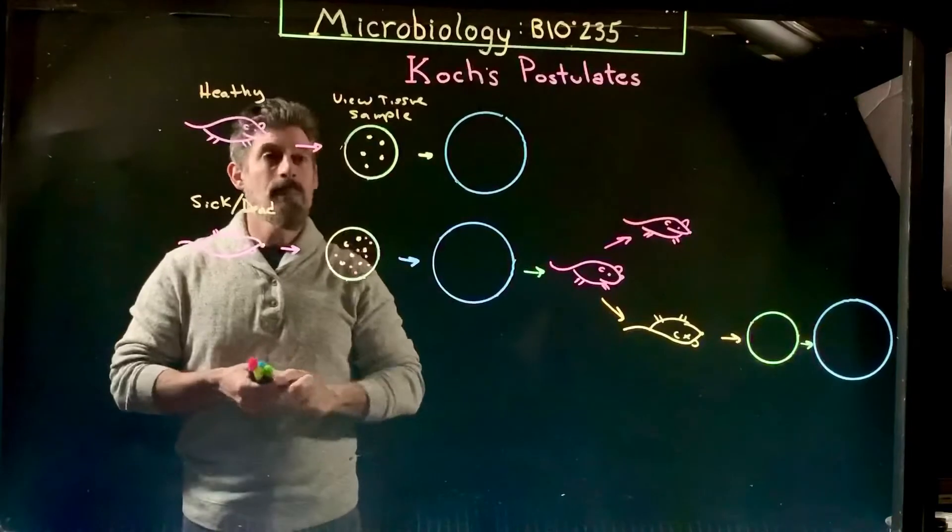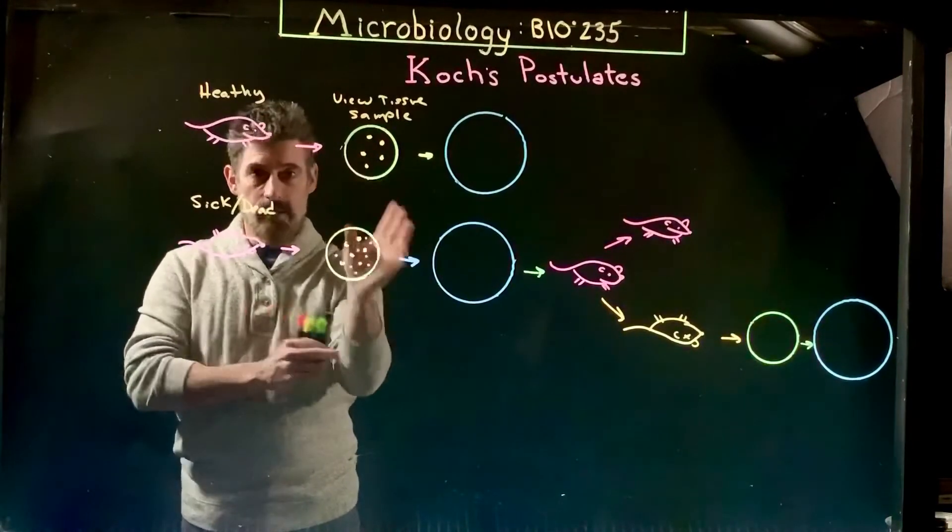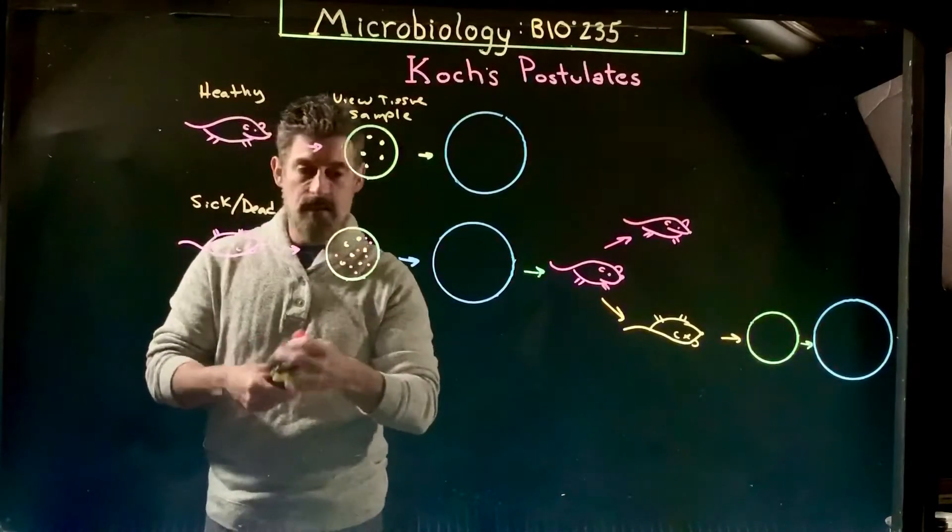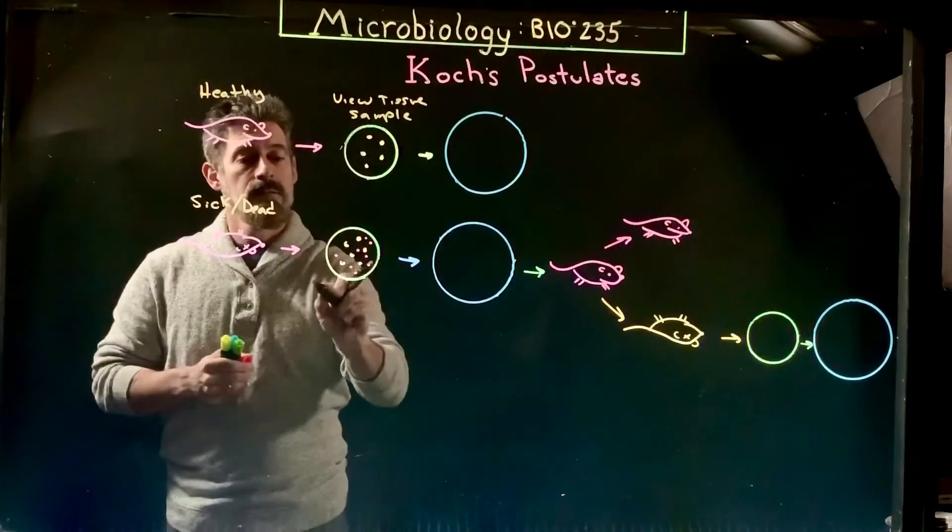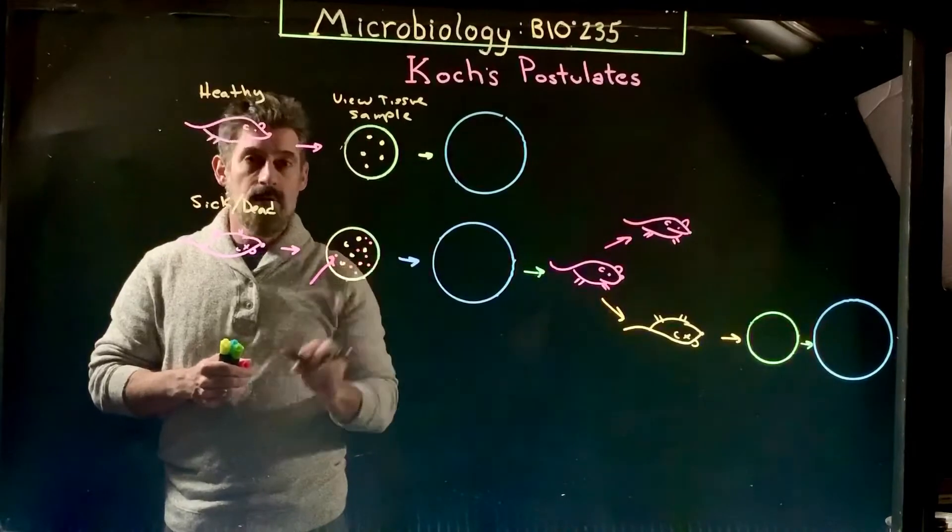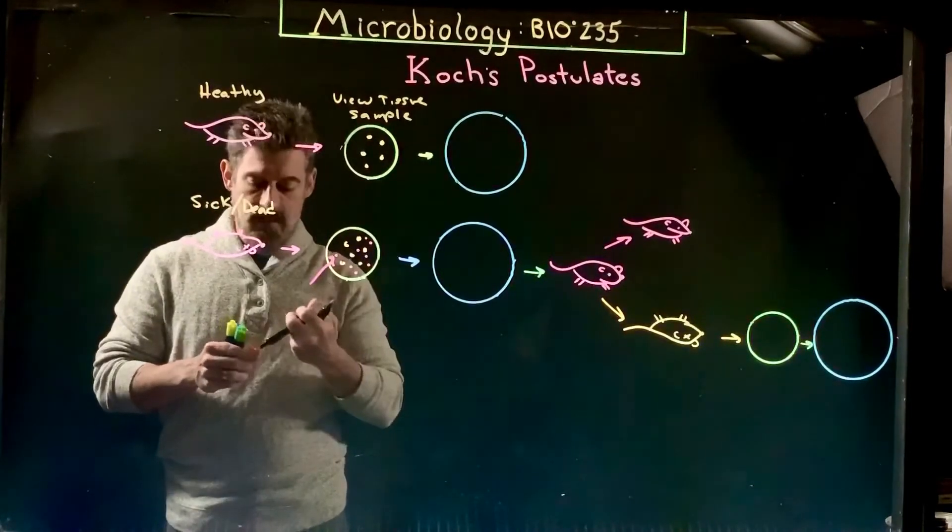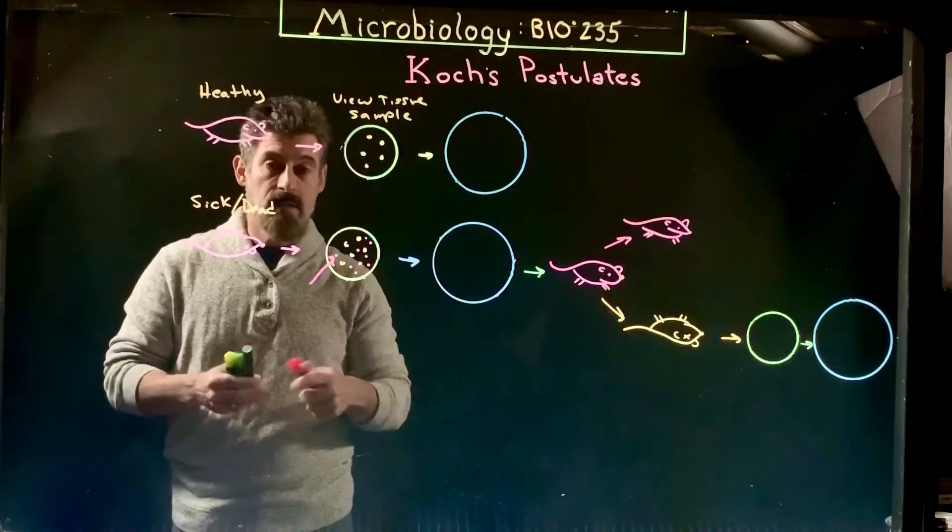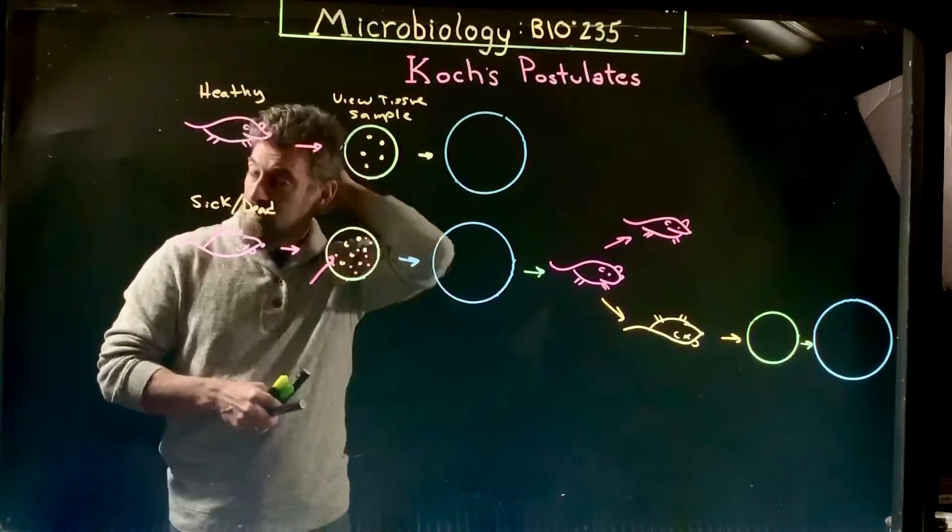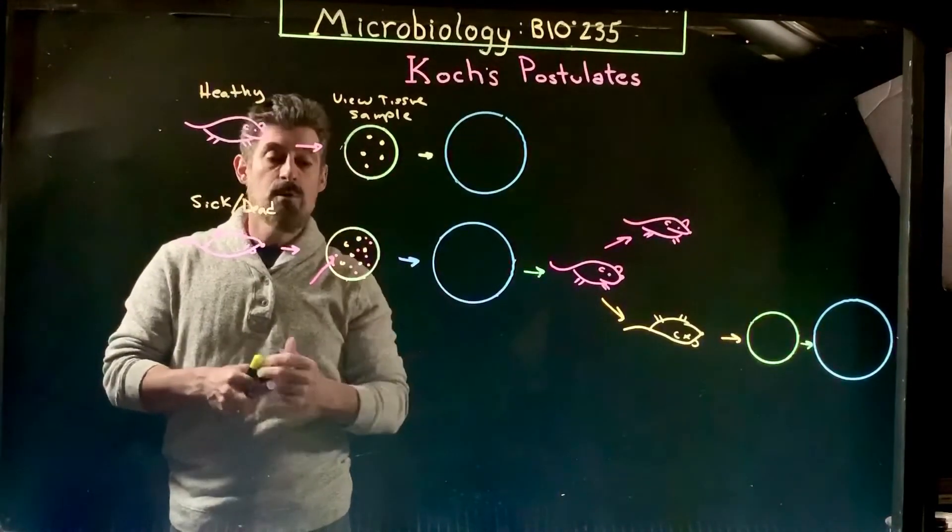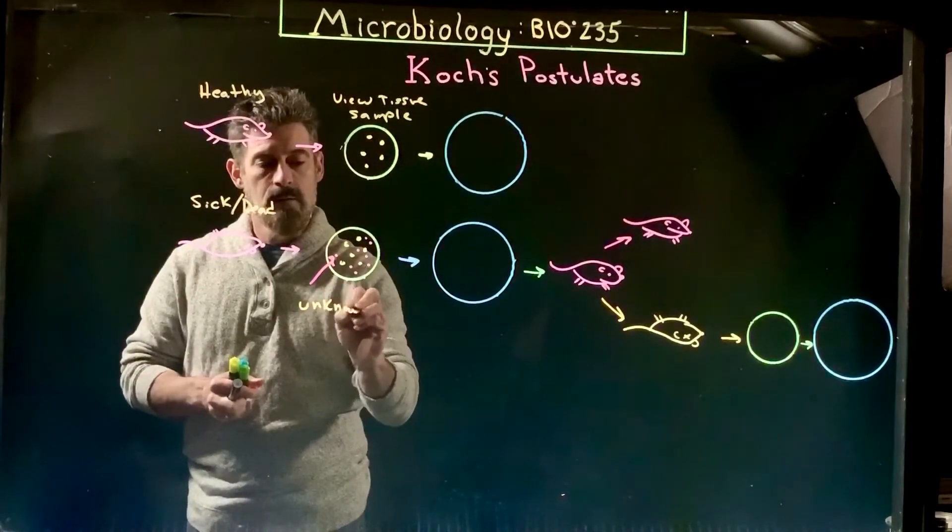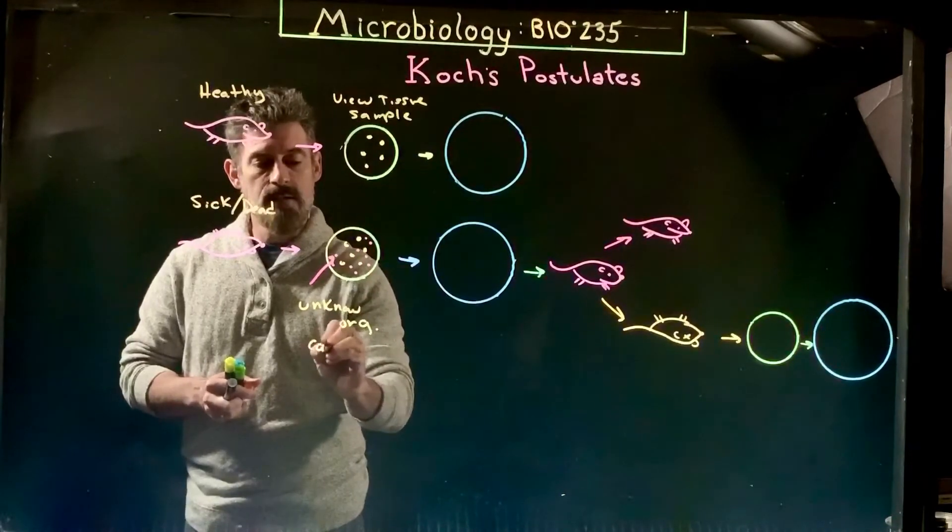So it might be blood, it might be something from a tissue, and you look at them and then you compare the two. For here, what we would see is there's something in the sample of the sick or dead organism that's not in the healthy one. So right now our hypothesis would be that this particular new organism, this unknown organism, causes the disease.